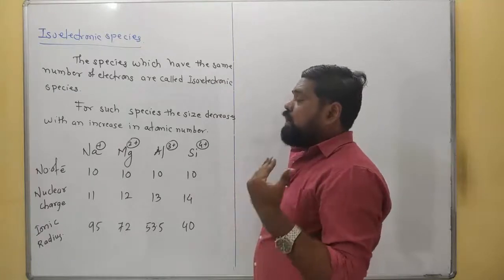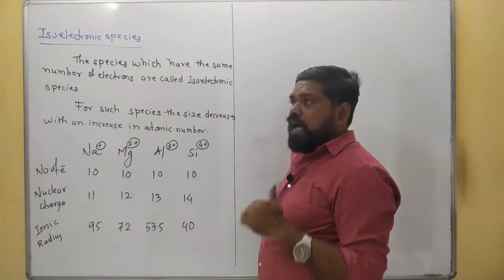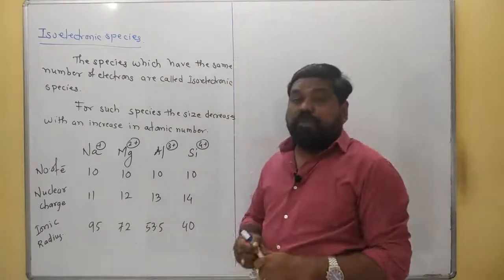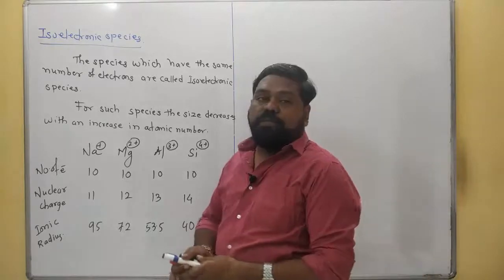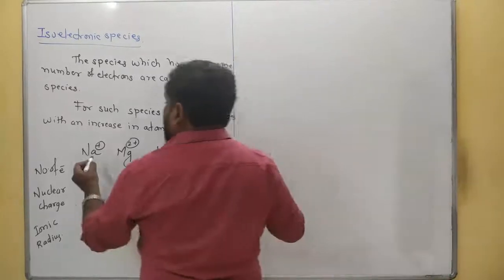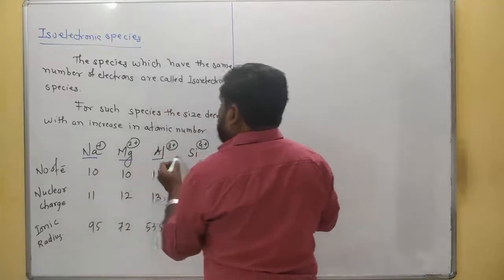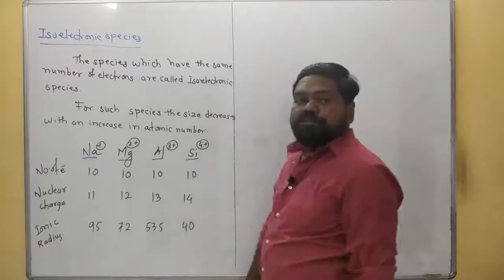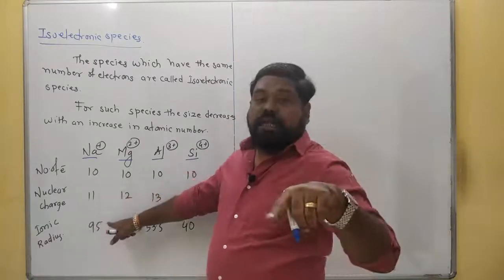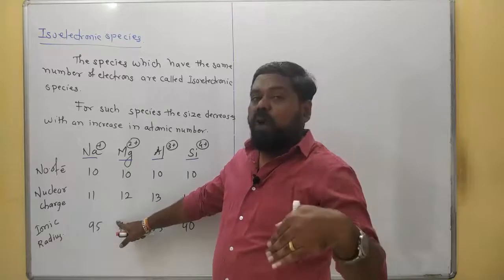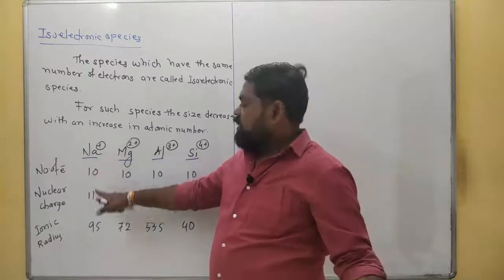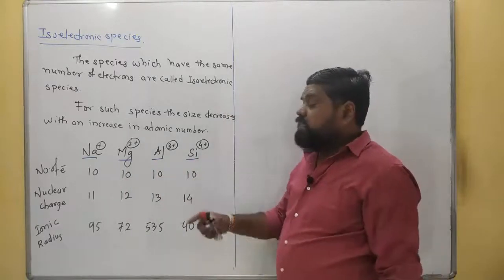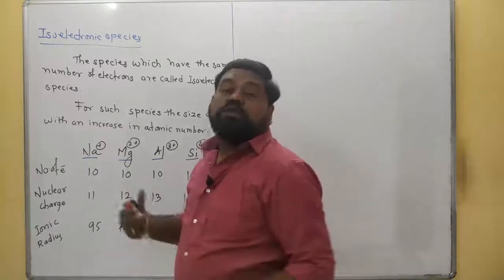For isoelectronic species, they all have the same number of electrons. For example, Na+, Mg2+, Al3+, and Si4+ all have 10 electrons each. But the nuclear charge — the atomic numbers — are 11, 12, 13, and 14 respectively. So in this case nuclear charge goes on increasing.